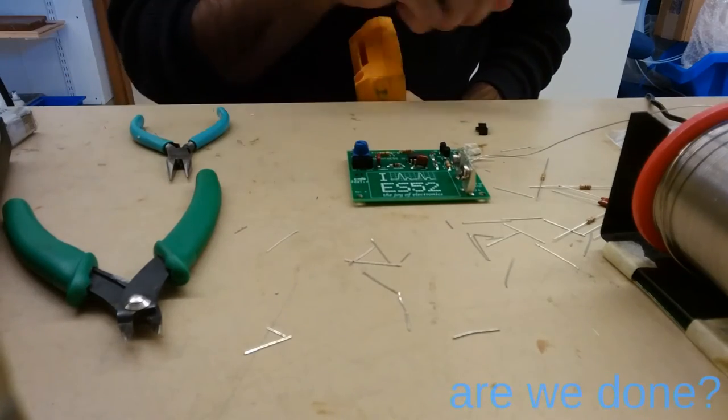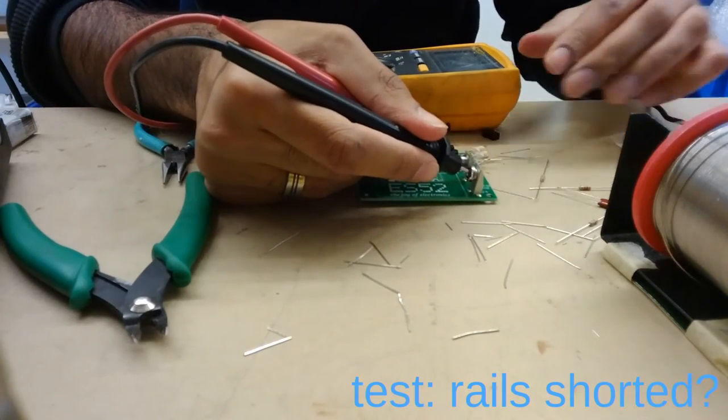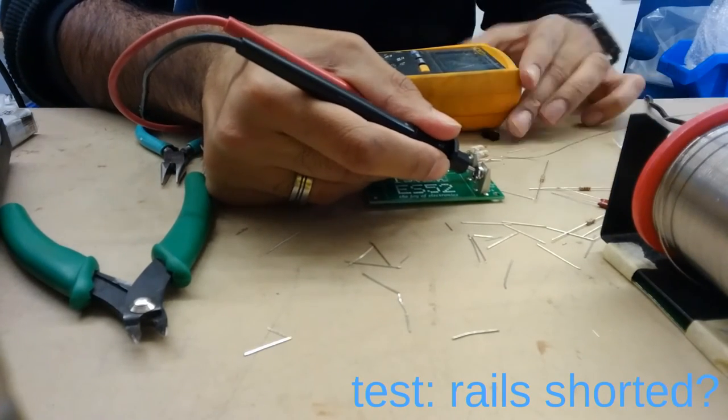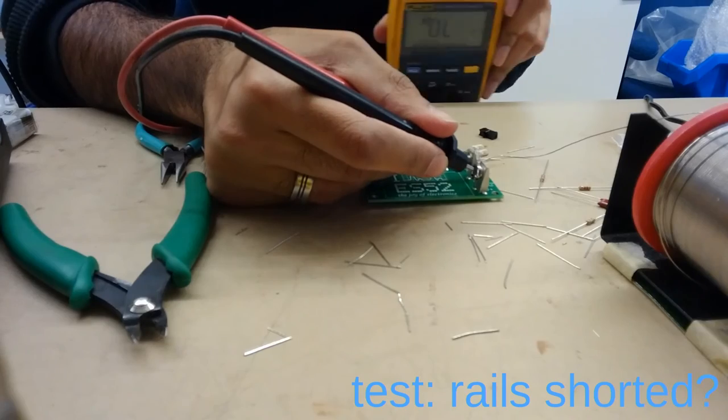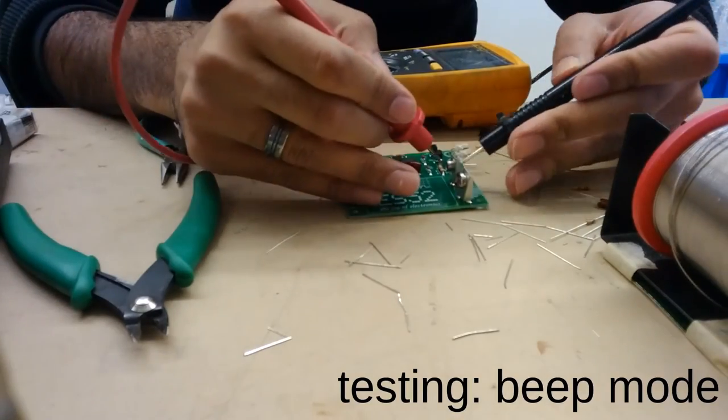Before putting the battery in, go ahead and use a multimeter and measure if there's any shorts between power and ground. You want the switch to be in the on position for this. So I'm just testing it right at the battery clip. And you can see right over there, it's saying OL overload. So the rails aren't shorted.